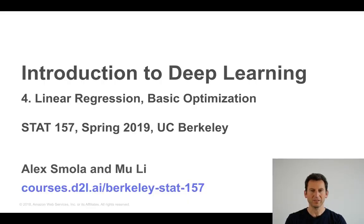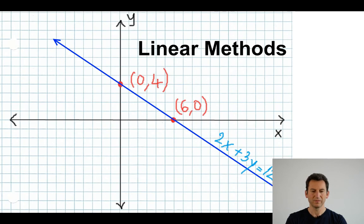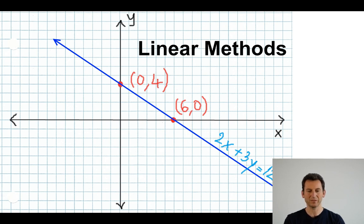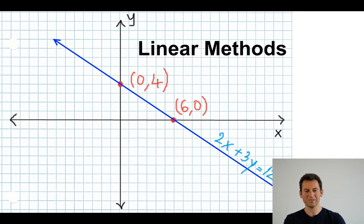Let's talk about linear regression and basic optimization using MXNet-GLUON. So let's start with linear methods. This is a very simple linear function. Let's say I have two points: 0 and 4, and 6 and 0. The equation 2x plus 3y equals 12 fits this nicely, and I could solve for y in order to get a nice linear regression.